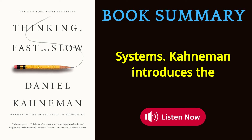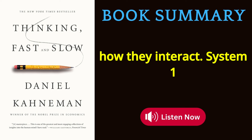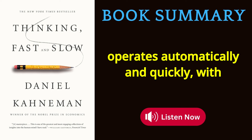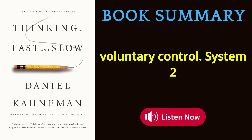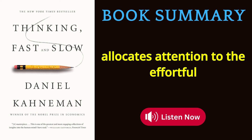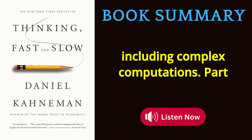Part 1: Two Systems. Kahneman introduces the concept of the two systems and explains how they interact. System 1 operates automatically and quickly, with little or no effort and no sense of voluntary control. System 2 allocates attention to effortful mental activities that demand it, including complex computations.